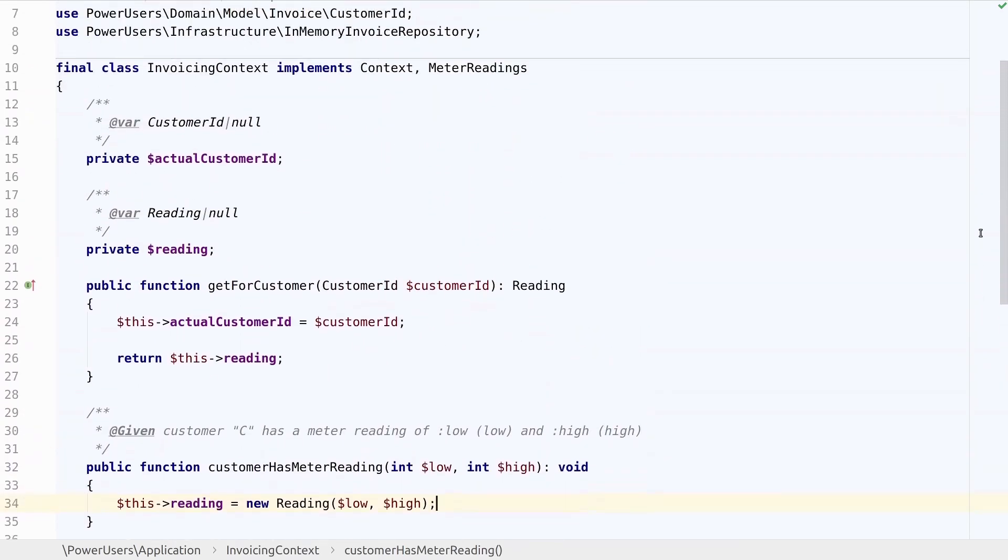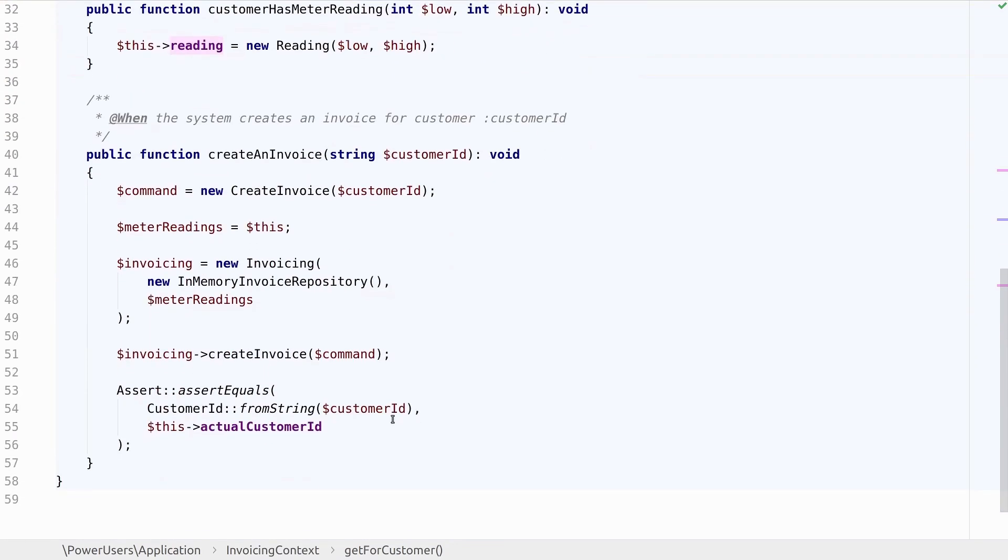Looking at what's going on there, meter readings has a method get for customer, and it will return the reading object we have set in this given step. It will also remember the actual customer ID as provided as a method argument here, so that we can later make a little assertion about it to check that this service actually uses the customer ID provided in the command object.